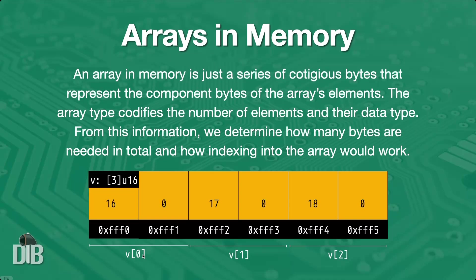When we do an indexing operation — which is basically syntax sugar for performing a calculation starting at the base address — if we want to go to the second element, we multiply the number of bytes per element by the index we're accessing. The second element has index one, so it's two times one, giving us two — we move over two bytes and arrive at the base byte of that second element. For the first element it's two times zero, so we stay at the base address. Just having the base address and the data type is all the information needed to access the array or any of its elements.